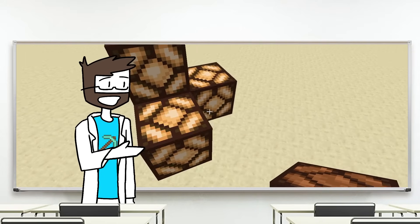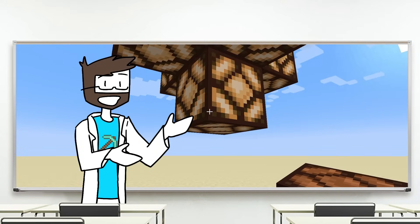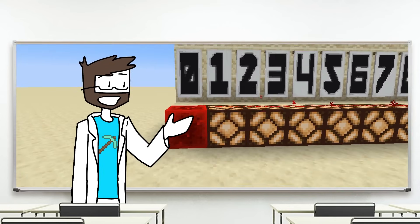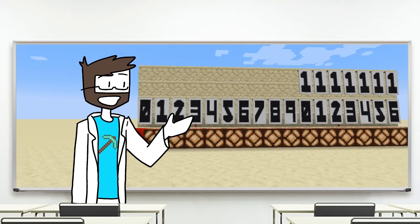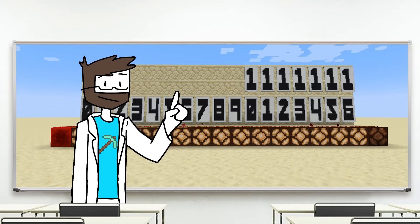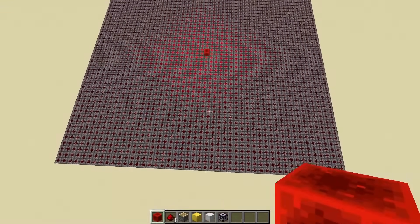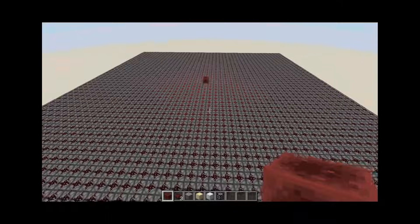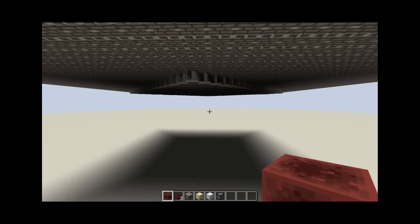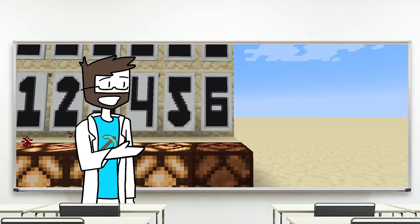A Redstone block provides power in all six directions around itself. As soon as it is placed, the power travels to the maximum distance of 15 blocks in any direction in a tenth of a second. It can be best visualized and utilized in horizontal directions, but there are ways to pass signals vertically too. Don't ask me how to do it though. I'm not an expert like Mumbo or Tango. Anyway, here's what that looks like.